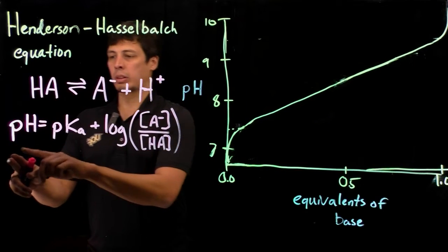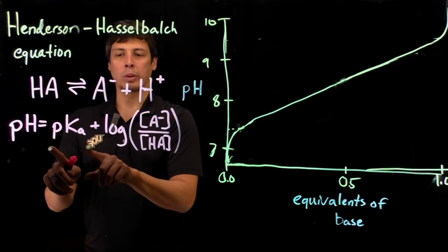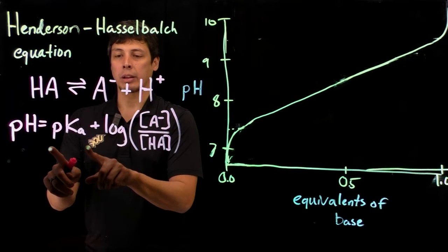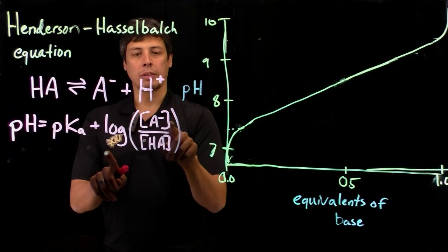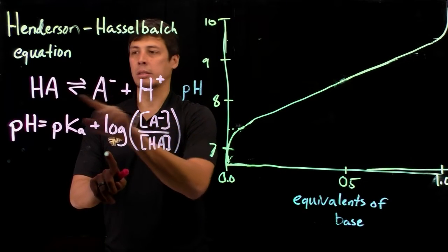This equation tells us what the pH is if we know the pKa for a weak acid or a weak base, and we know the ratio of the concentrations of the conjugate base and the acid.